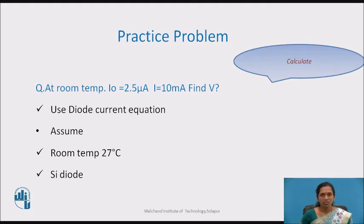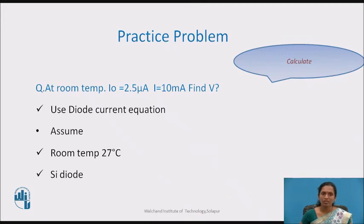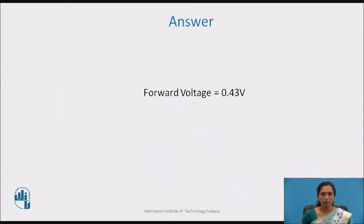Now recall the diode equation and calculate the forward voltage. You can pause this video, solve it, and verify that the diode follows the equation. Use the diode current equation, assume room temperature, convert temperature to Kelvin, and assume a silicon diode to get the appropriate η value. The answer is 0.43 volts.